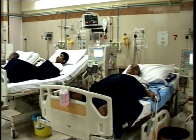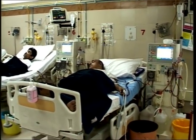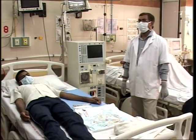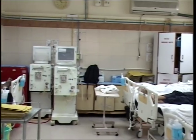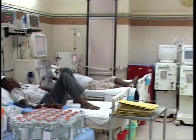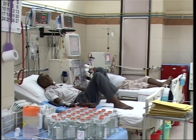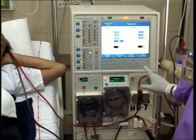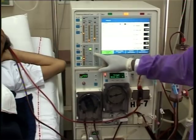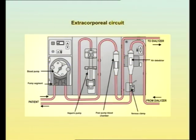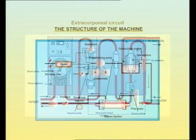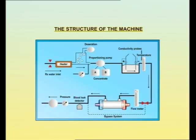Hemodialysis is the extracorporeal process which removes the accumulated uremic toxins, corrects the electrolyte imbalances, and removes fluid from the body. The blood and dialysate are separated from each other by a semi-permeable membrane, permitting solute and water transfer through the process of diffusion and convection. The integrated system of the hemodialysis machine allows the operator to control the blood and dialysate circuits and monitor important variables associated with hemodialysis.